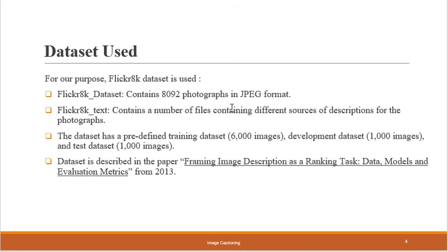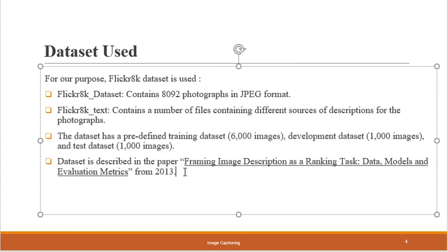Coming to the dataset used: I have used the Flickr 8K dataset, which contains about 8000 photographs in JPEG format, with a text file containing about 5 descriptions for each photo, so I can train on that dataset. This dataset has a predefined training set of about 6000 images, a development set of about 1000 images, and a test set of 1000 images. We can use other datasets like Flickr 30K or MS COCO, but those are big datasets requiring greater computing power, so I chose this smaller one to work on a laptop.